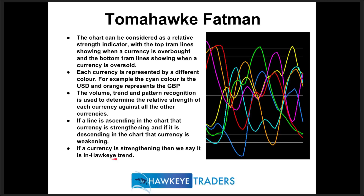If a line is ascending in the chart — for example the cyan line for the US Dollar — then we know the US Dollar is strengthening against all its currency pairs. Conversely, if a line is descending, such as the orange line for the Pound, that currency is currently weakening. We define this as being 'in Hawkeye Trend' — when a currency is strengthening on the chart, it's in Hawkeye Trend.